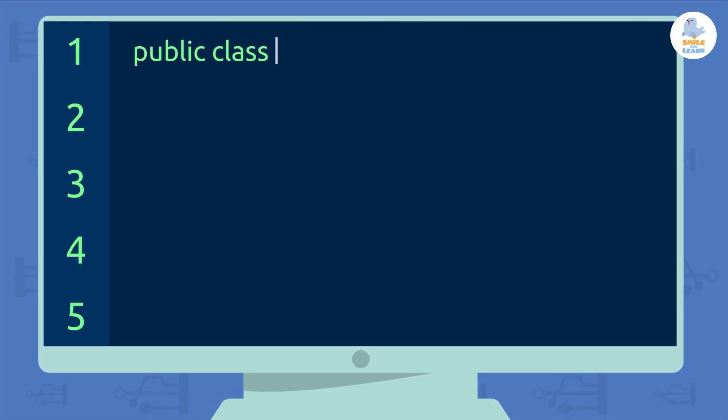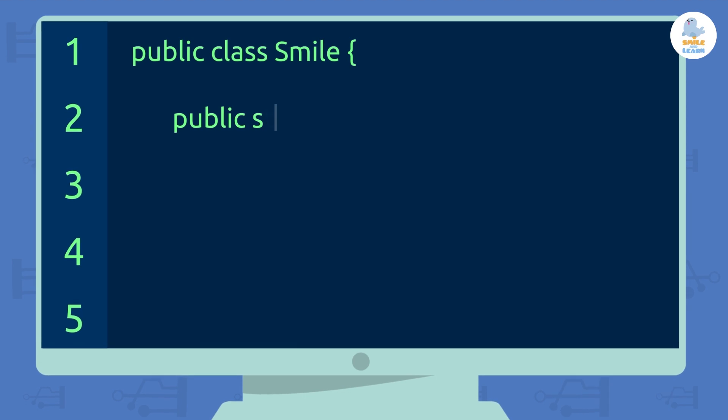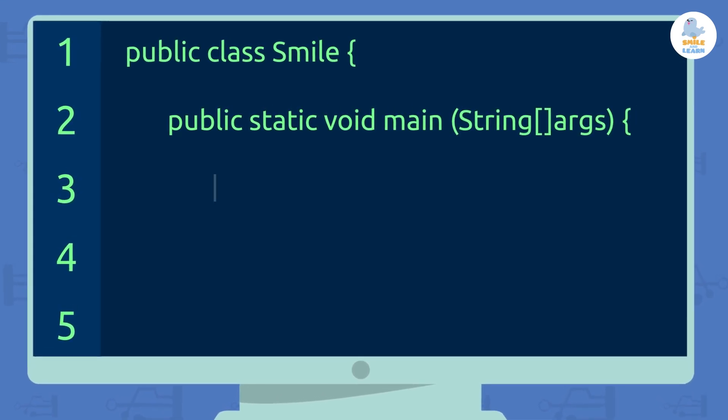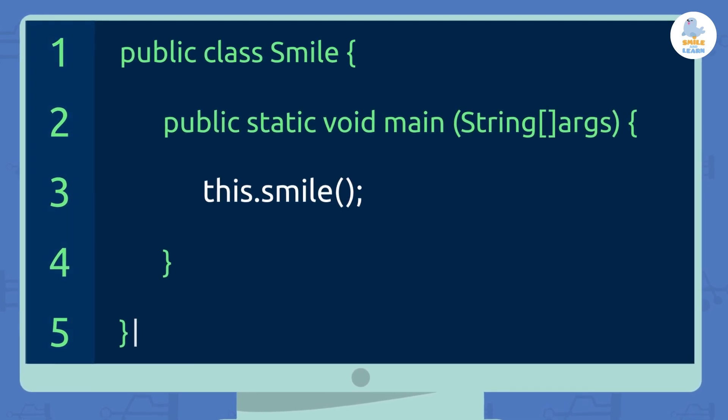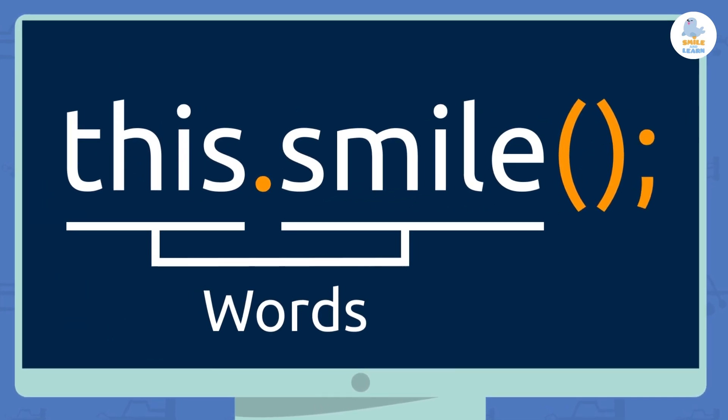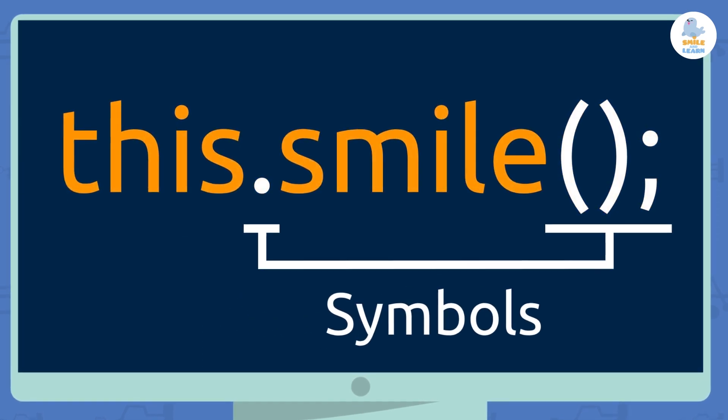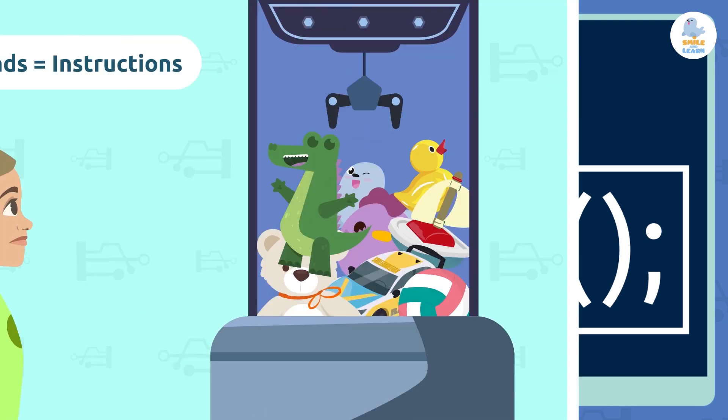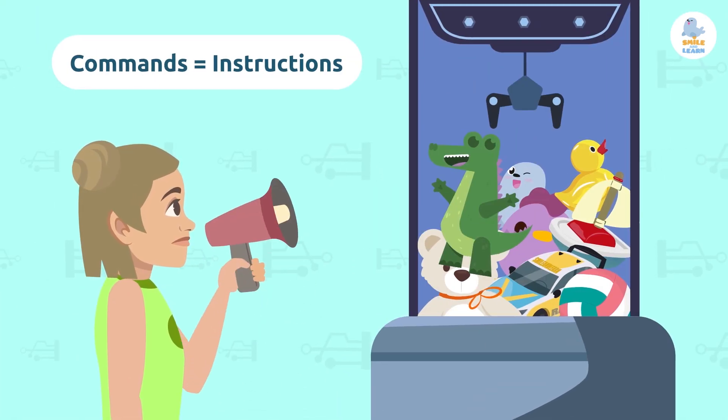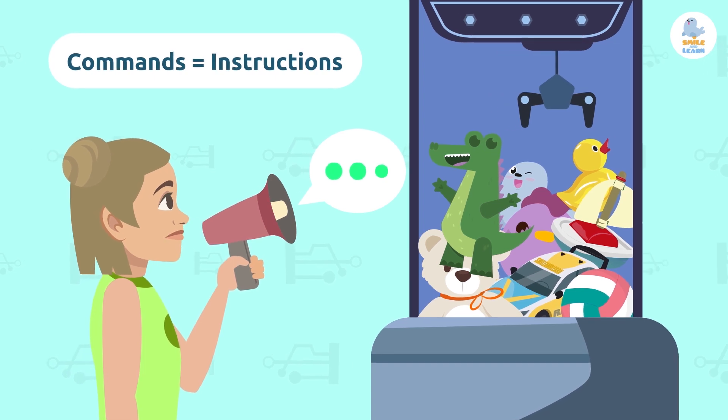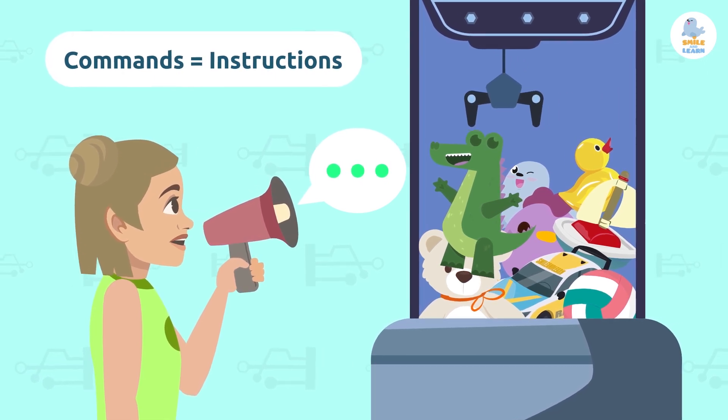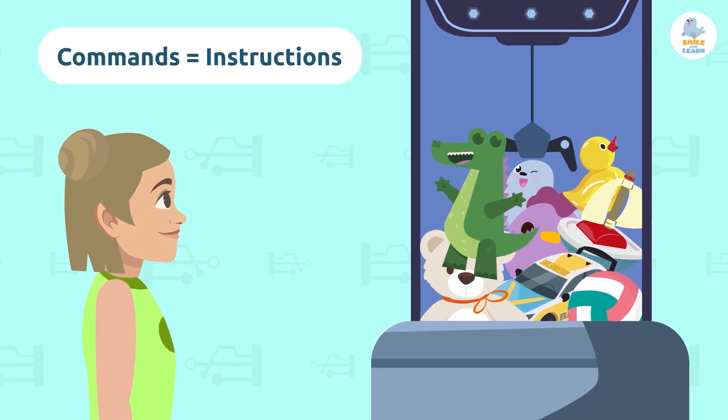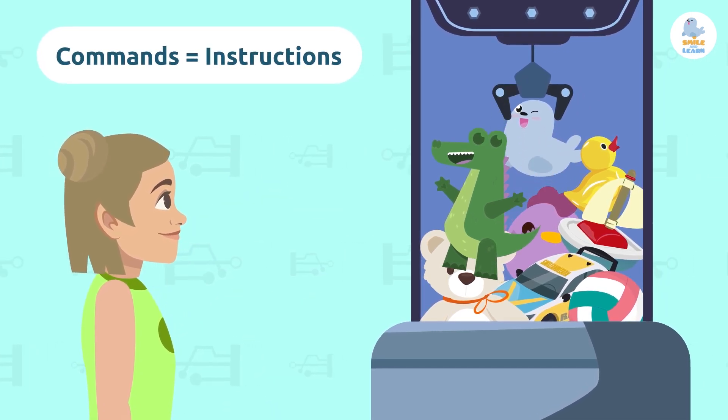Programming has many different languages. That means there are many different ways to give instructions to machines. With these languages we can write code, which combines words and symbols to form commands. Commands are instructions we give machines. They tell machines what actions they should do, and they're different for each language. When a computer receives a command, it knows what action it has to do.